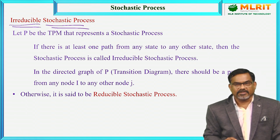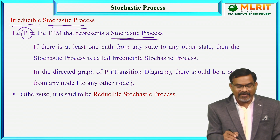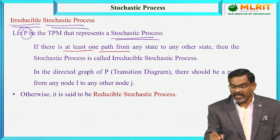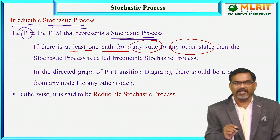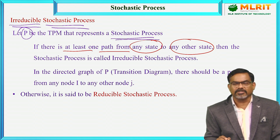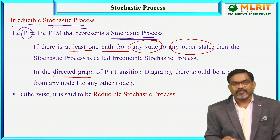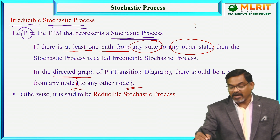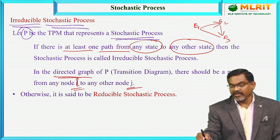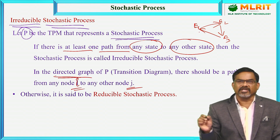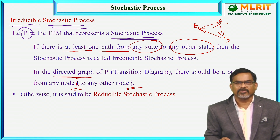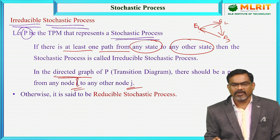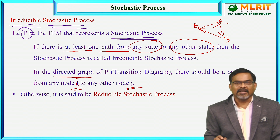Coming to the next topic, irreducible stochastic process. Let us consider a transition probability matrix which represents a stochastic process. The definition is: if there is at least one path from any state to any other state, then the stochastic process is called an irreducible stochastic process. At least one path means, in the directed graph or transition diagram, there must be a path from node i to another node j. For example, with three states e1, e2, e3, there must be a path from e1 to e2, e1 to e3, e3 to e1 — then we can start from any node and reach any other node, and the process is said to be irreducible. Otherwise, it is said to be a reducible stochastic process.